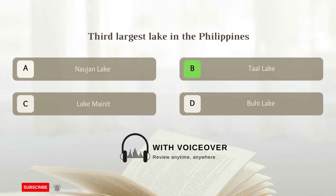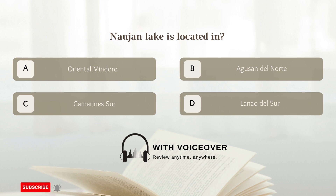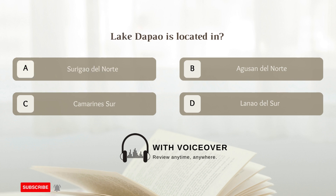Third largest lake in the Philippines — Answer B. Taal Lake. Nauhan Lake is located in: A. Oriental Mindoro; B. Agusan Del Norte; C. Camarines Sur; D. Lanao Del Sur. Answer A. Oriental Mindoro.